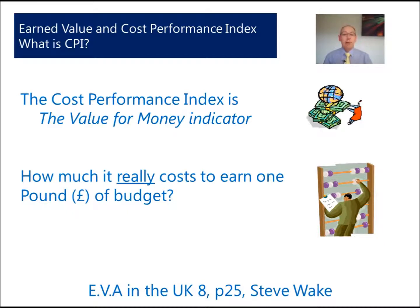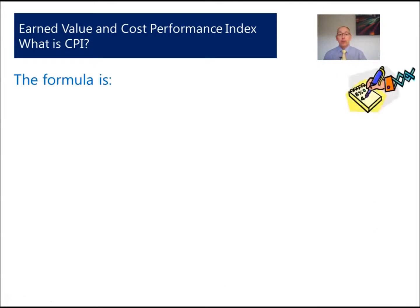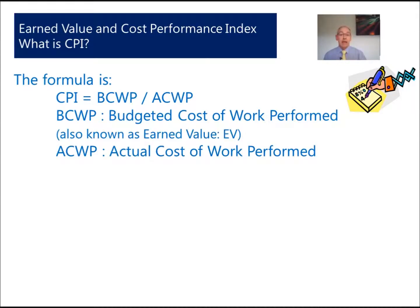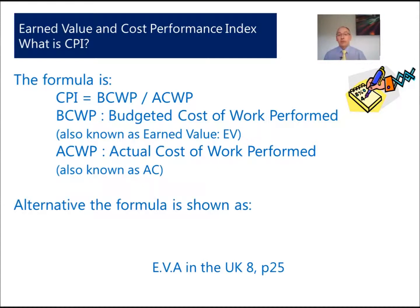So if we have a pound to produce a deliverable, does it cost us that pound — more or less — or do we actually deliver on the money? The formula: CPI equals BCWP divided by ACWP. The BCWP is the budgeted cost of work performed, also known as the earned value. The ACWP is the actual cost of work performed, also known as AC.